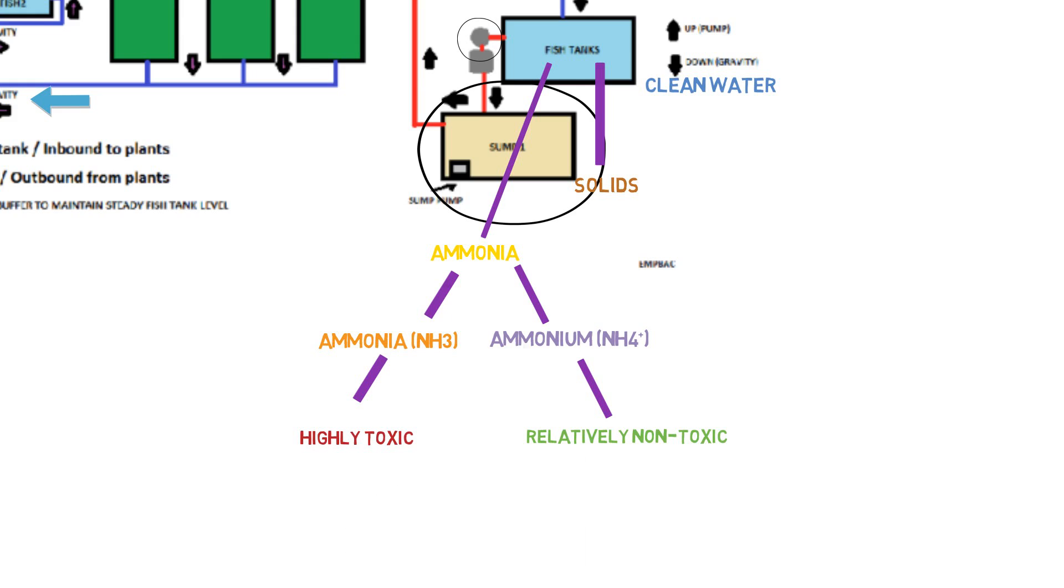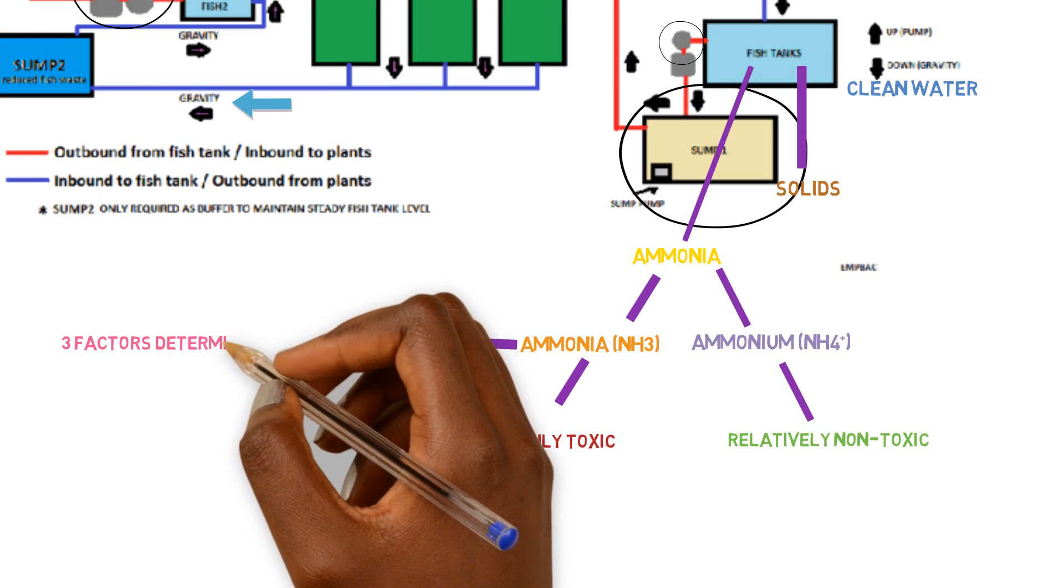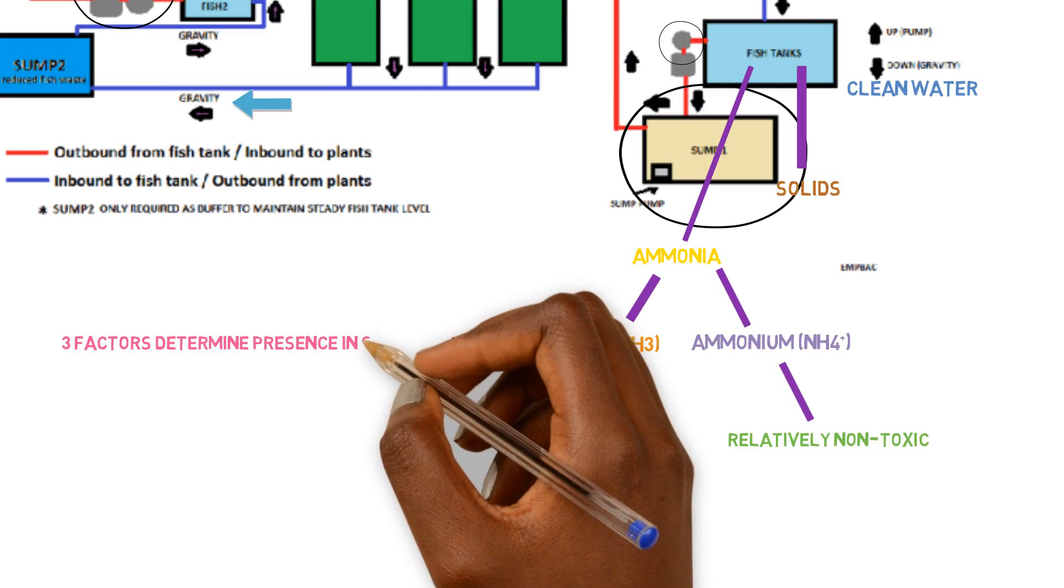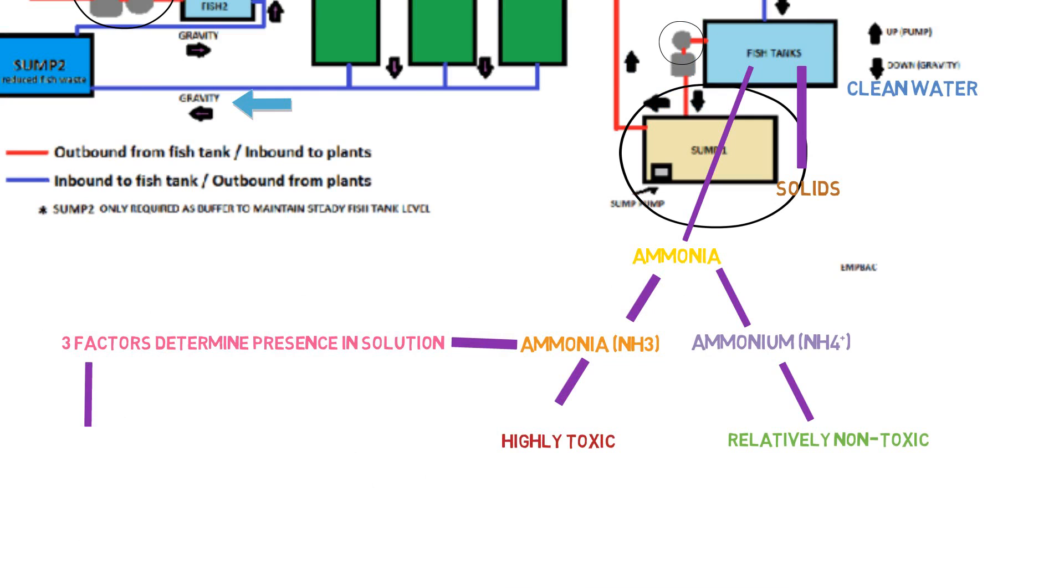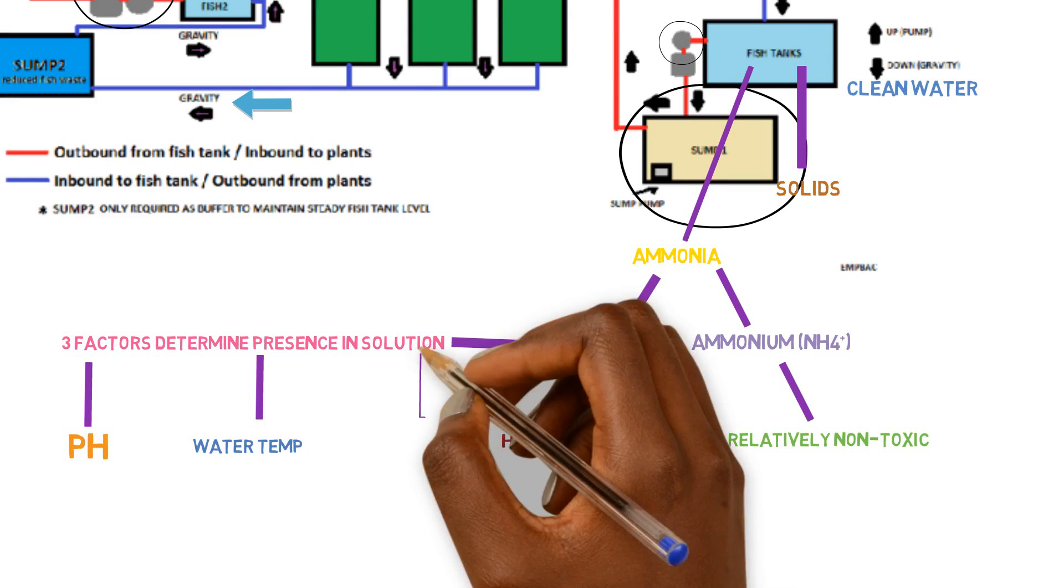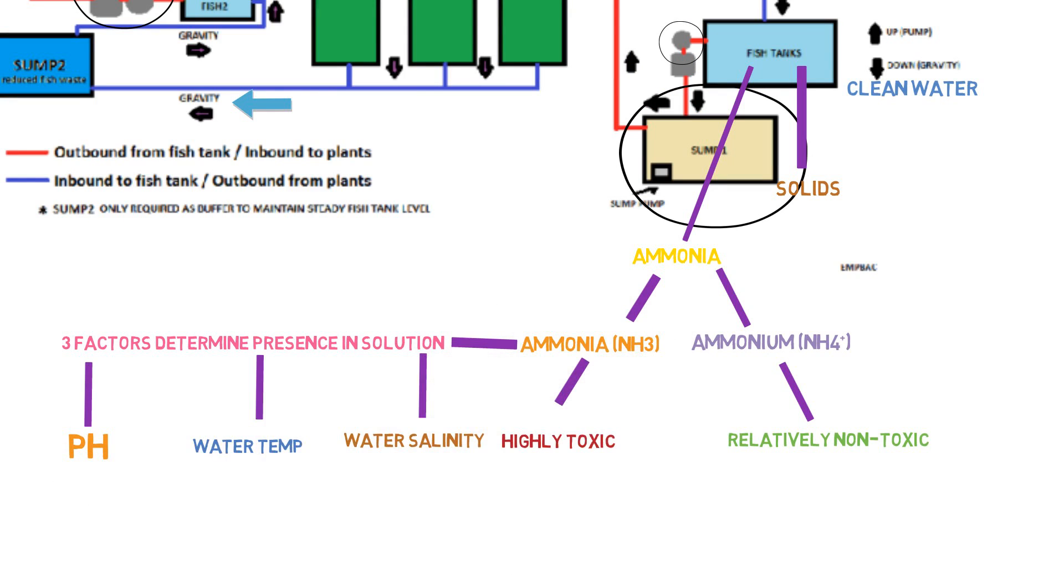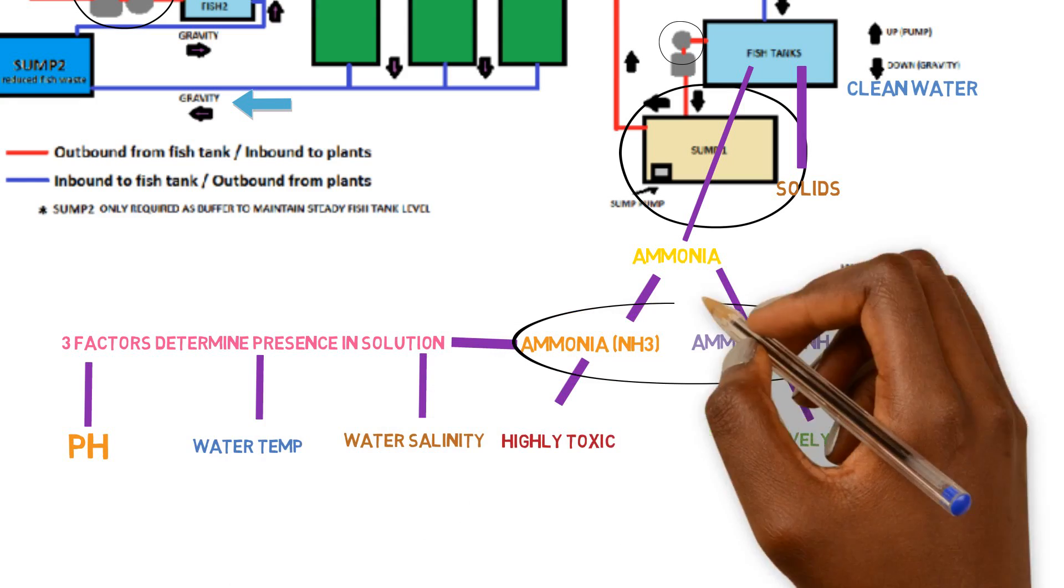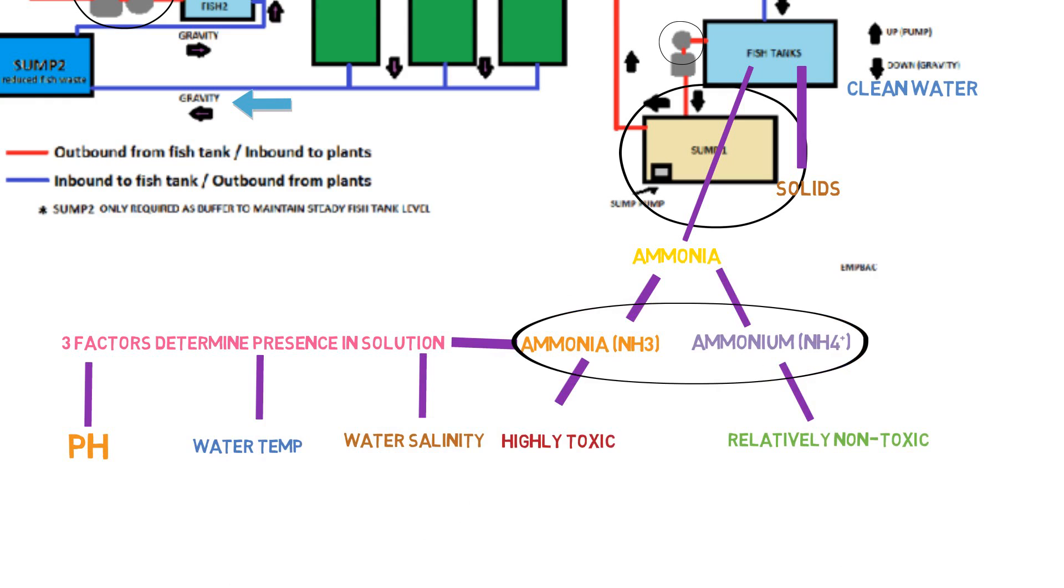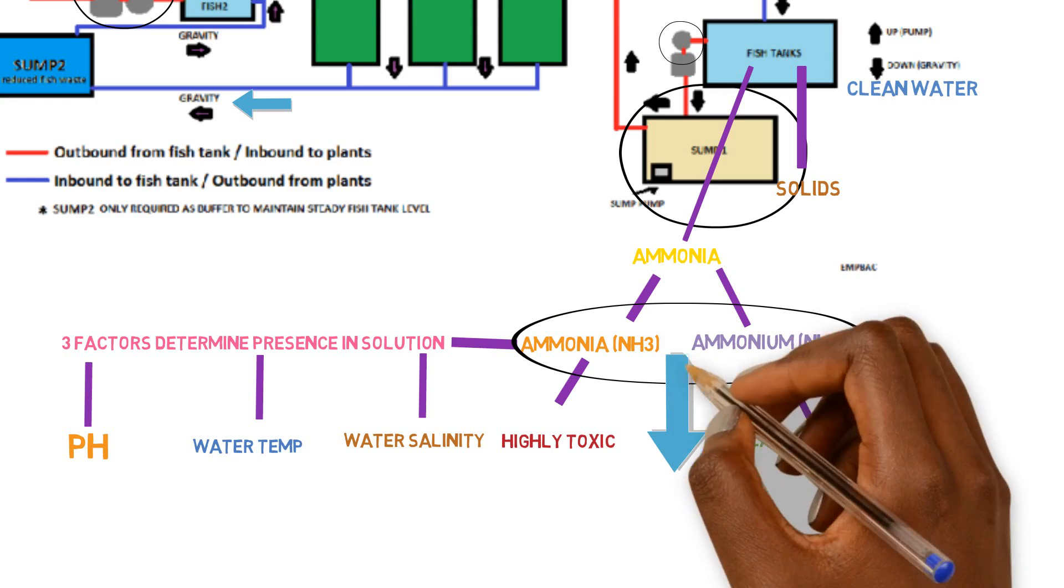Now the presence or the concentration of free ammonia inside of the system is pretty much dictated by three factors: pH, water temperature and water salinity. And when you take an ammonia test, what you're doing is reading the combination of both of these together, the ammonium and the ammonia, and you're getting a total combination of ammonia in the system known as TAN.